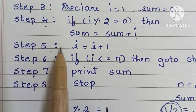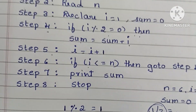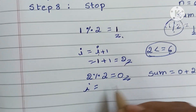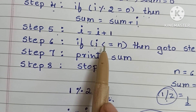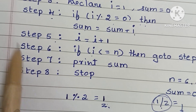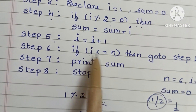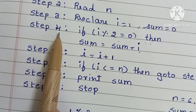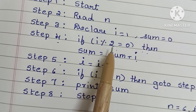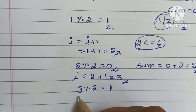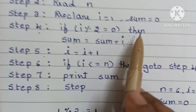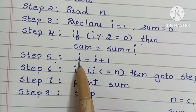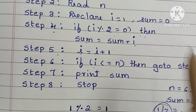In step 5, we increase i again: i equals 2 plus 1, becoming 3. In step 6, 3 is less than or equal to 6, so we go back to step 4. We check 3 modulo 2: the remainder of 3 divided by 2 is 1, so the condition is false. We go to step 5 and increment i to 4.